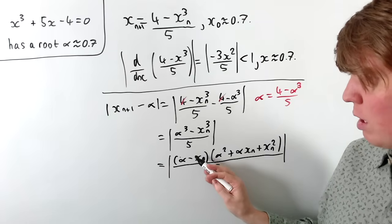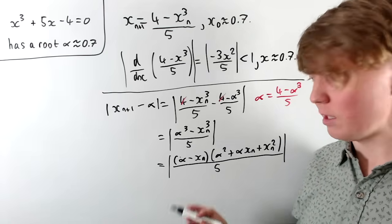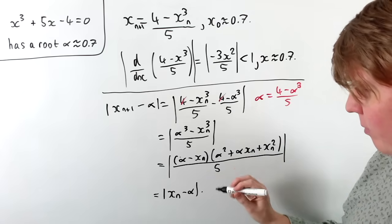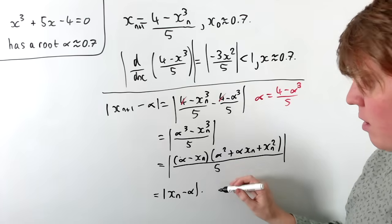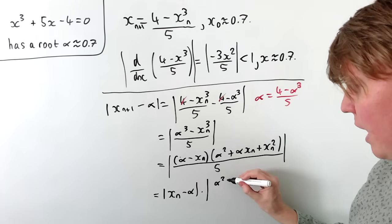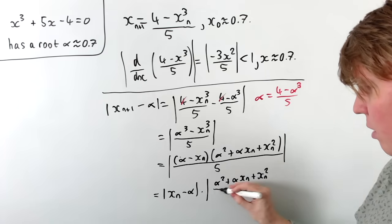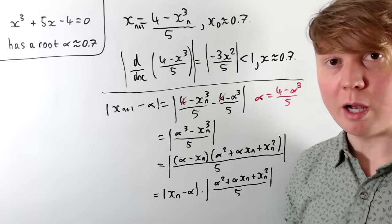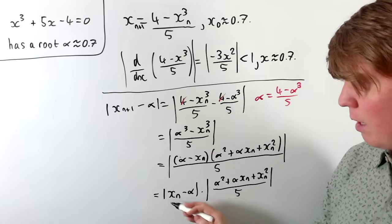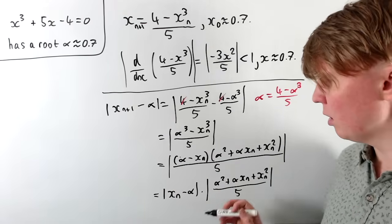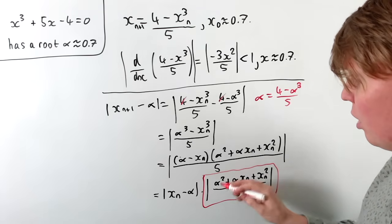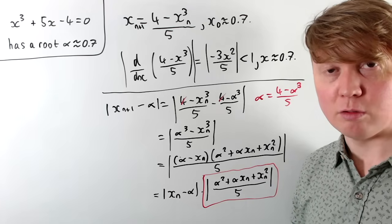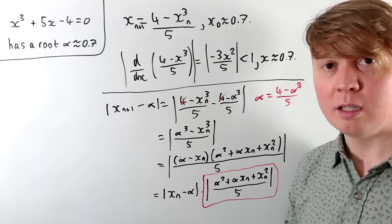We can take out the factor and take the absolute value: |x_n minus alpha| multiplied by the absolute value of (alpha squared plus alpha·x_n plus x_n squared), all divided by 5. This term |x_n minus alpha| is the distance of the previous term from our root. So if we can find some bounds on the remaining quadratic piece, we can find a relationship between the distance of the next point from the root and the distance of the previous point from the root — telling us how quickly the process is converging towards alpha.